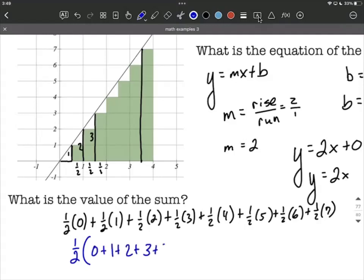we're going to have zero plus one, two, three, four, five, six, seven inside a big set of parentheses, which works out to be one half times 28, which will be 14 is their combined areas, the sum of their areas for all those rectangles.